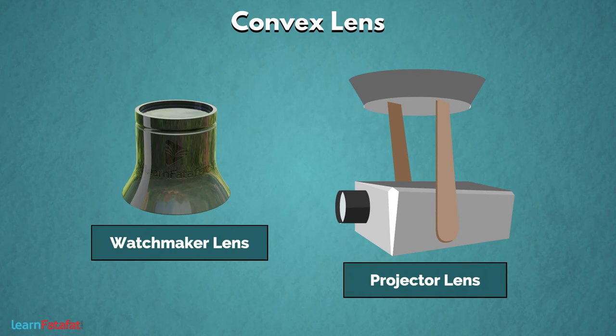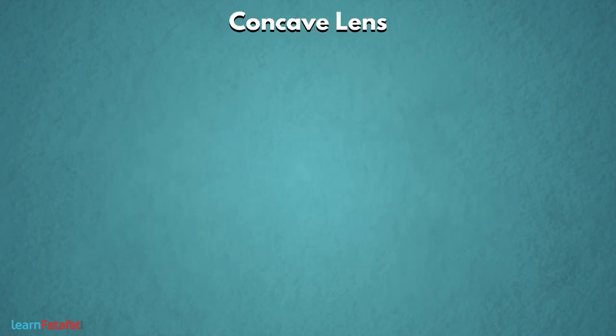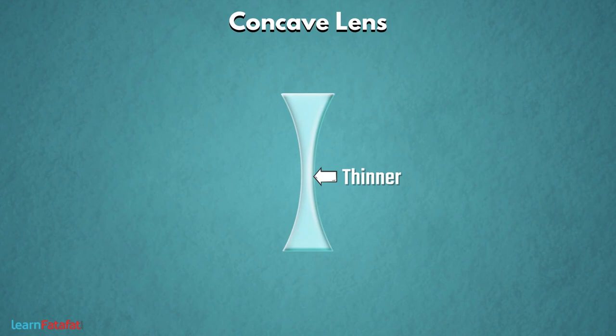अब चलिए जानते हैं concave lenses के बारे में. The lens which is thinner at the center as compared to edges is called concave lens.